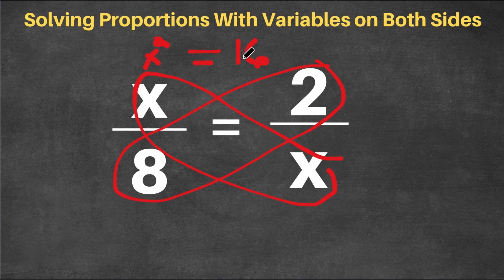So x squared equals 16. Now, if we do the square root on both sides to cancel out the square, we get x, because the square root of x squared is x, equals the square root of 16, which is 4.